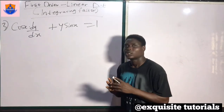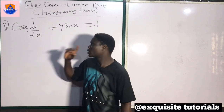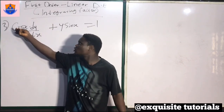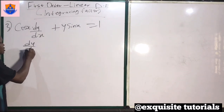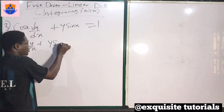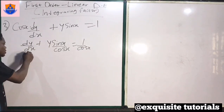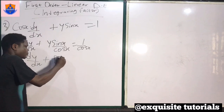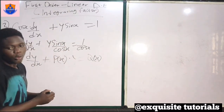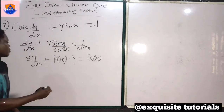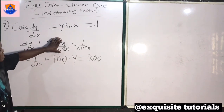This is question 3. We have cos(x) times dy/dx plus y·sin(x) equals 1. We cannot compare it to our general equation because dy/dx must stand alone. So we divide through by cos(x), giving: dy/dx plus y·sin(x)/cos(x) equals 1/cos(x). Now we can compare with our general equation.